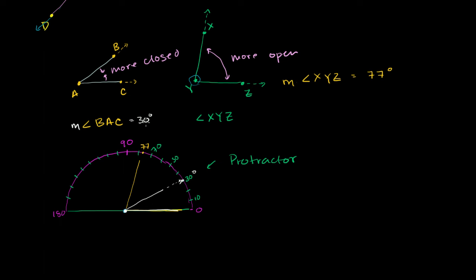Looking straight at these numbers, 77 degrees is clearly larger than 30 degrees, and so it is a larger angle, which makes sense because it is a more open angle.